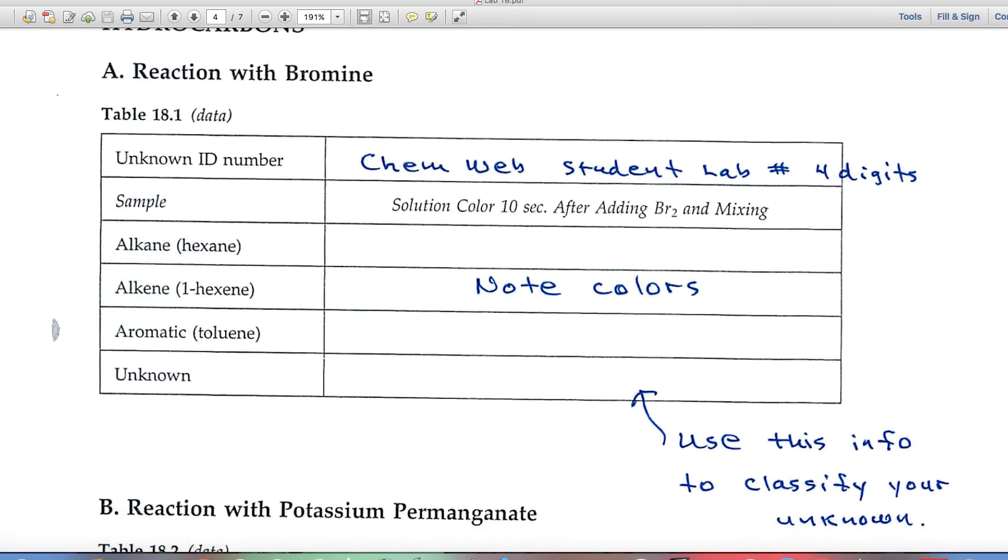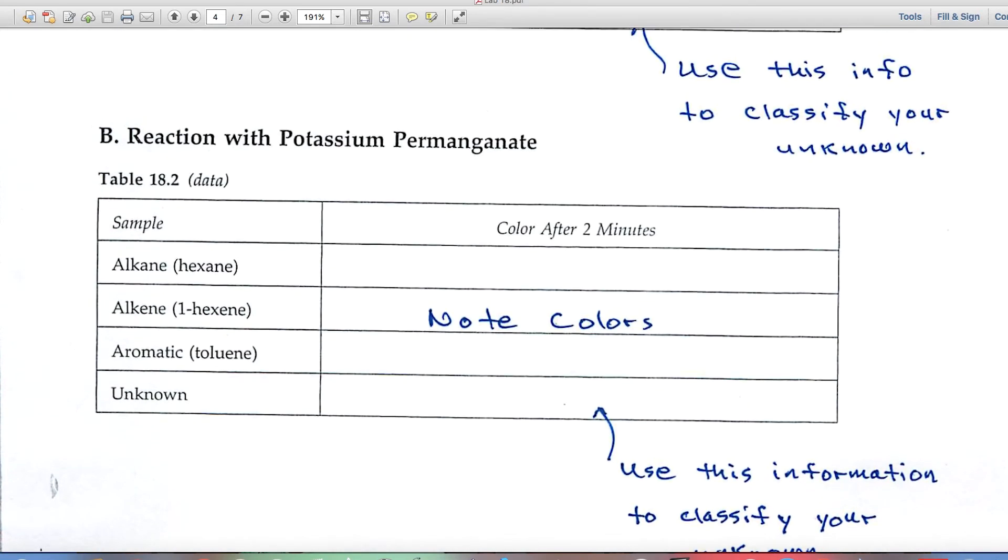Part B looks at the reaction with potassium permanganate, and again, you'll look for color changes. And alkanes, alkenes, and aromatics give characteristic reactions with potassium permanganate, and you'll try and coordinate, correlate the color of your unknown with one of those three.